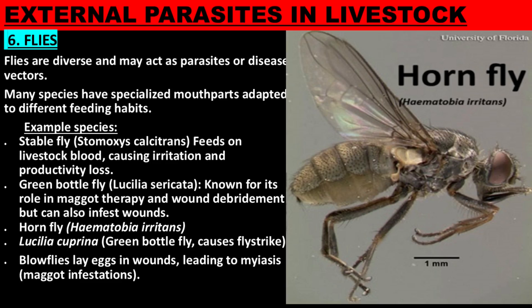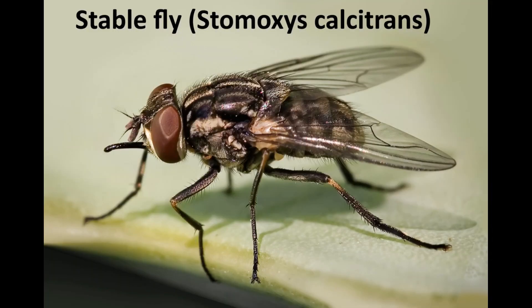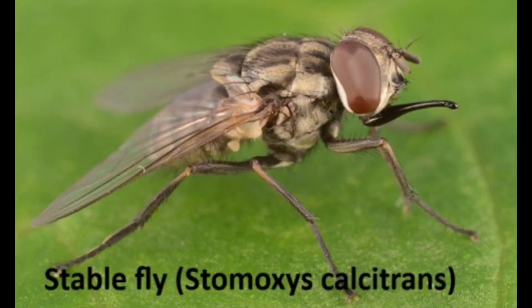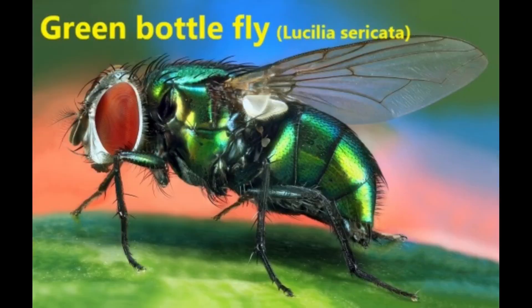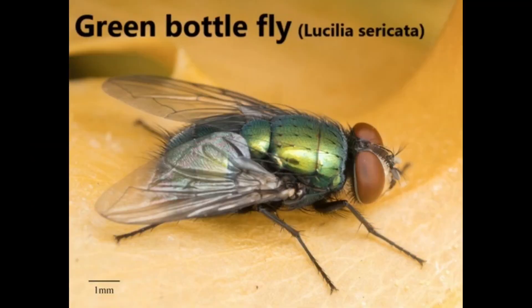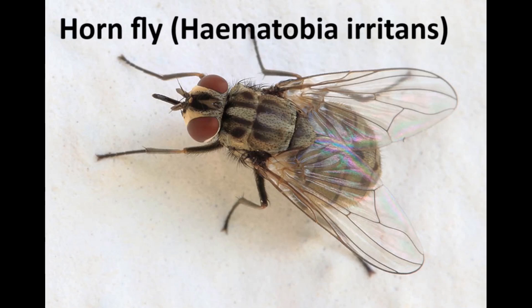Flies are diverse and may act as parasites or disease vectors. Many species have specialized mouthparts adapted to different feeding habits. Stable flies use piercing mouthparts to feed on blood, causing pain and stress to animals. The green bottle fly is known for its role in maggot therapy and wound debridement, but it can also infest wounds. Horn flies are also a notable species.